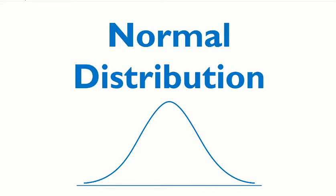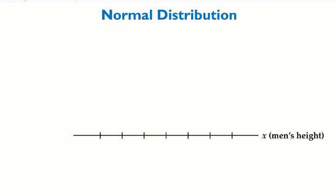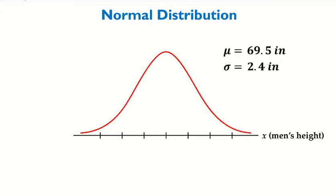In this video I'm going to be covering section 6-2, normal distribution. Normal distribution is a distribution where the distribution has a bell-shaped curve. For example, let's assume that men's height is normally distributed with a mean of 69.5 inches and a standard deviation of 2.4 inches, so the distribution of men's height has a bell-shaped distribution.